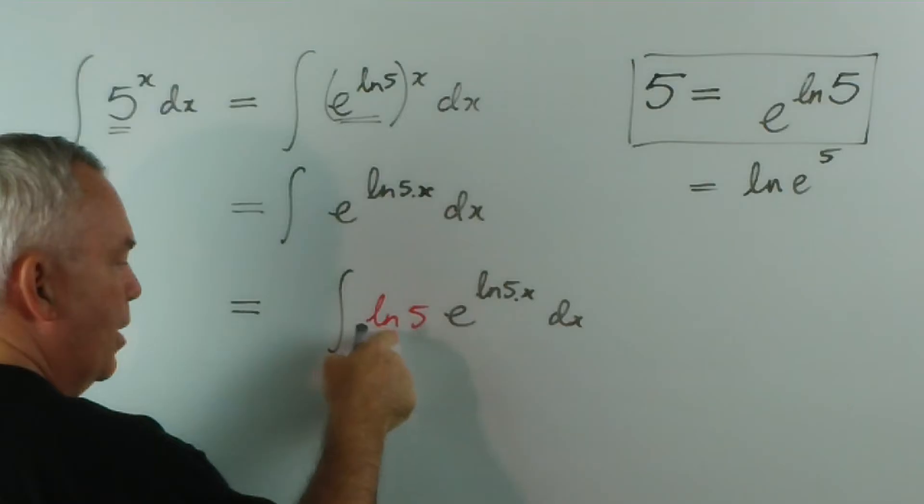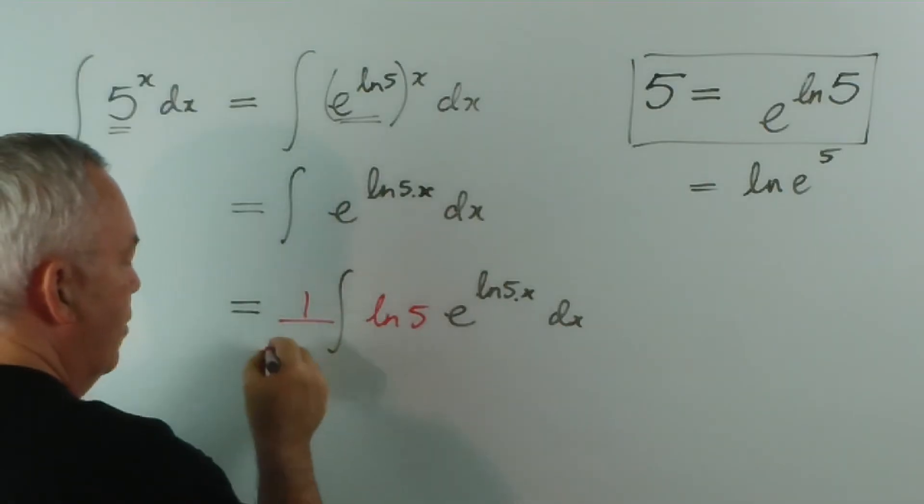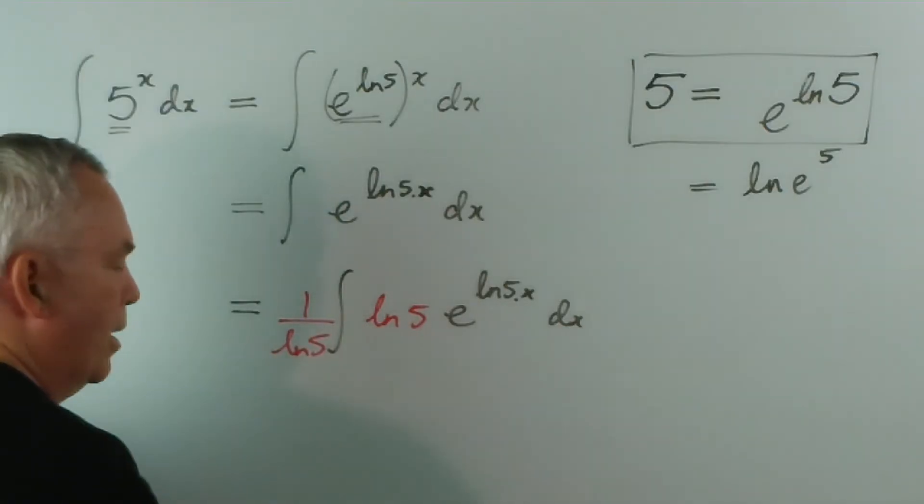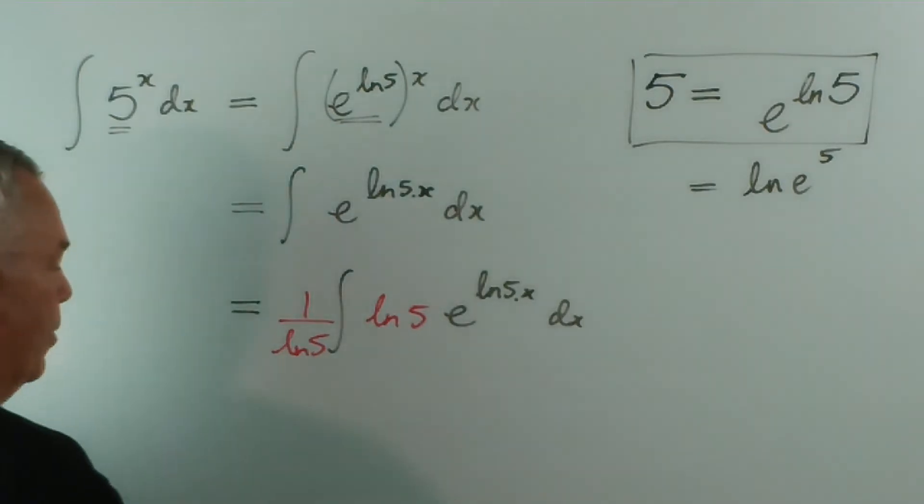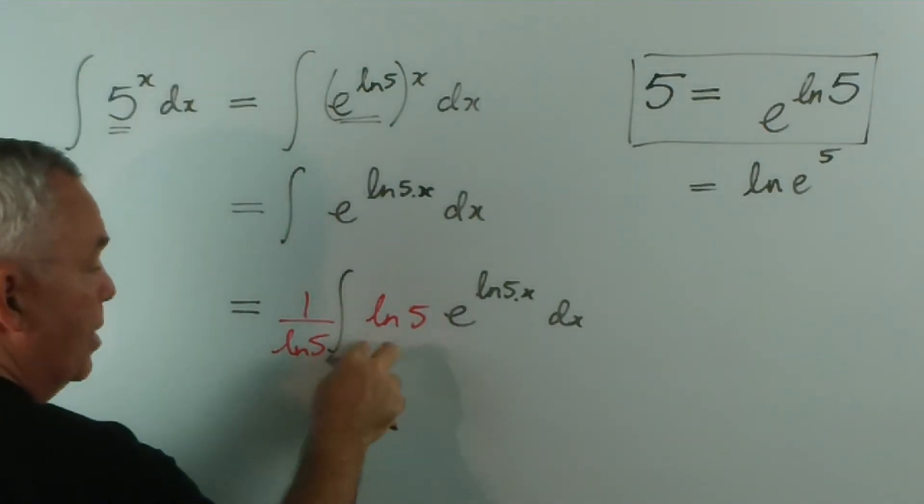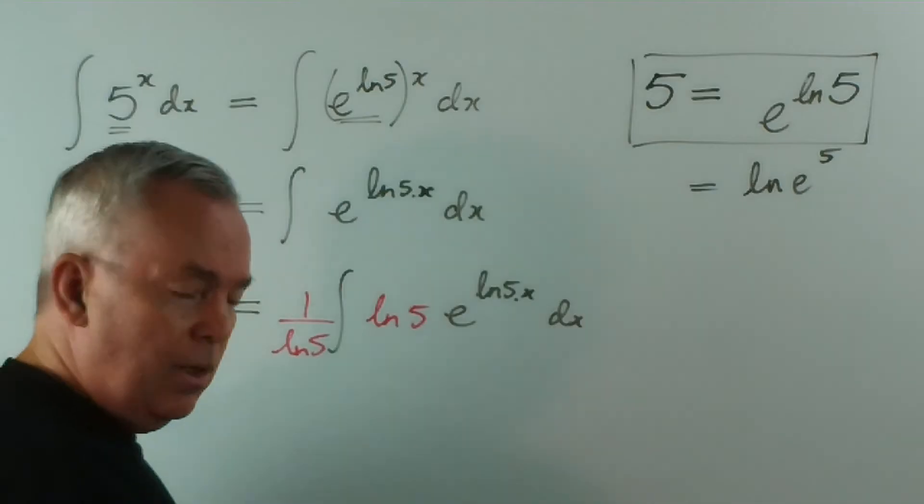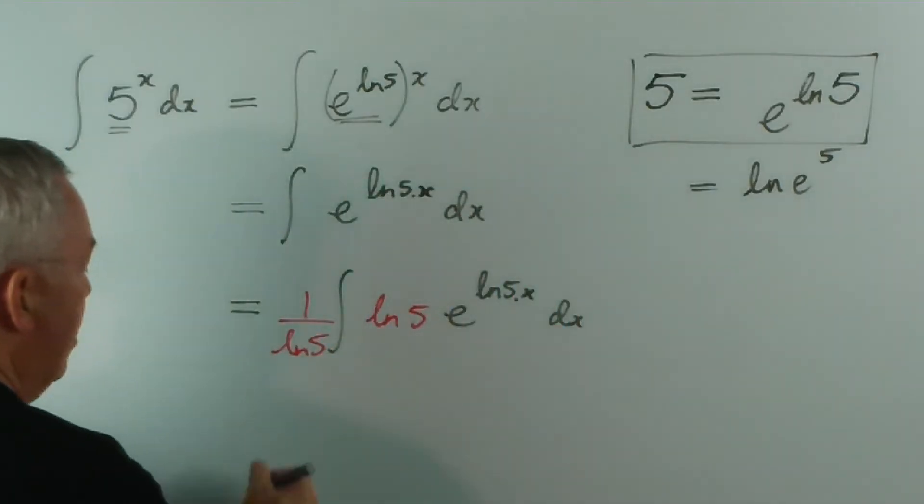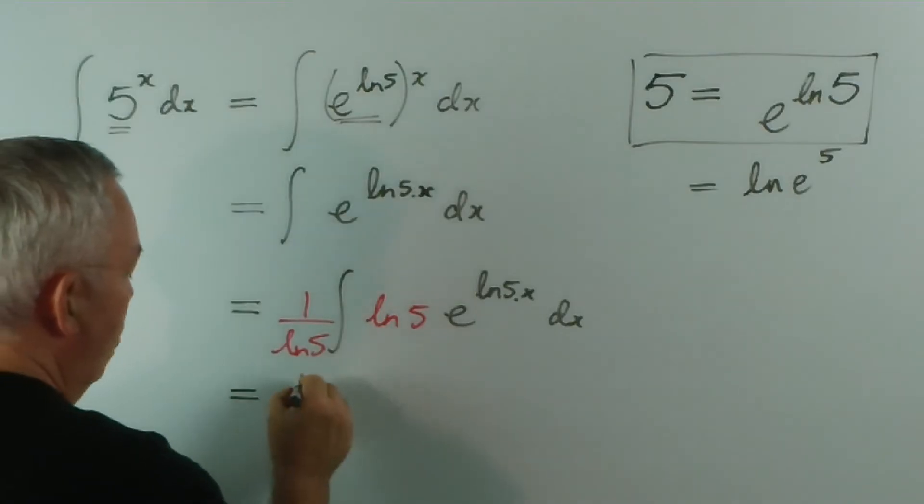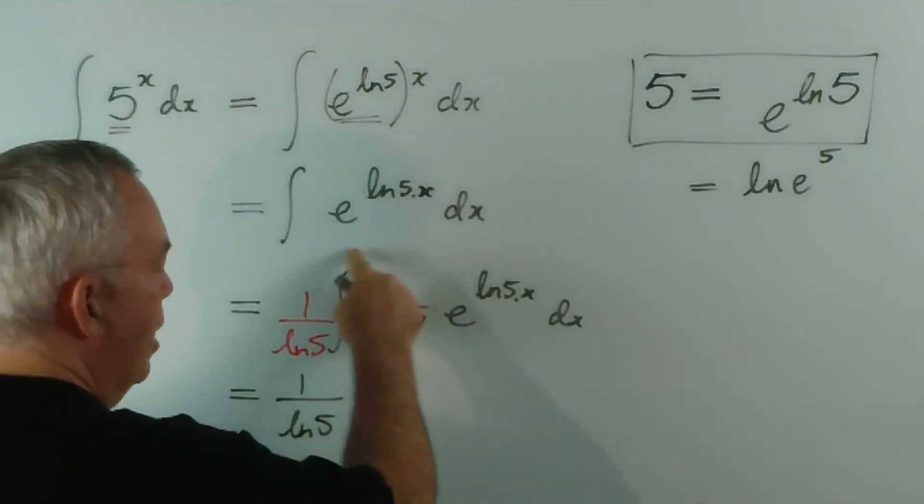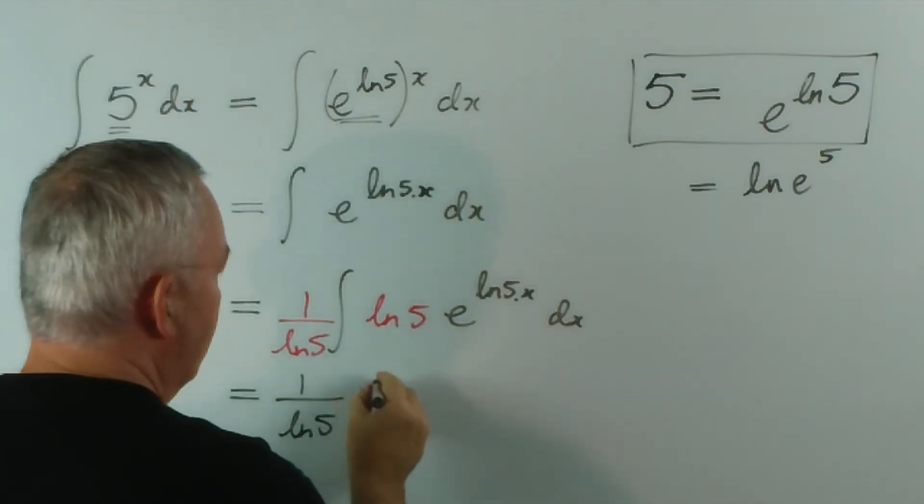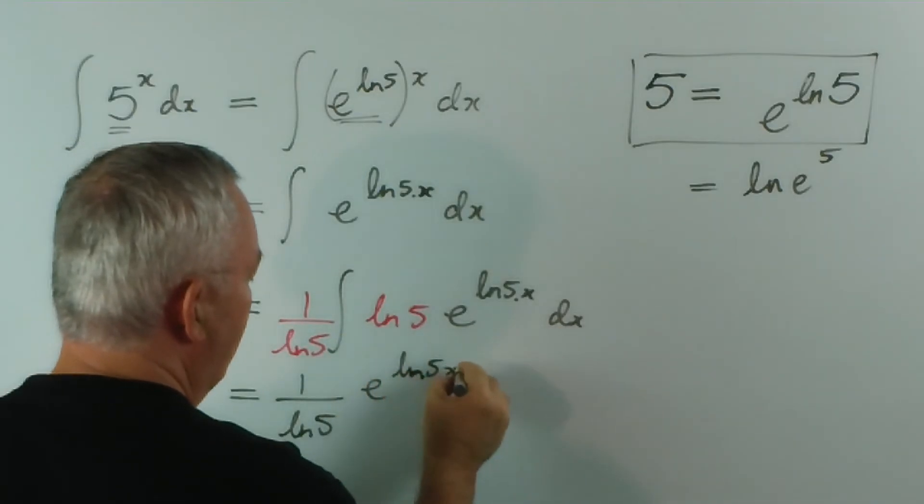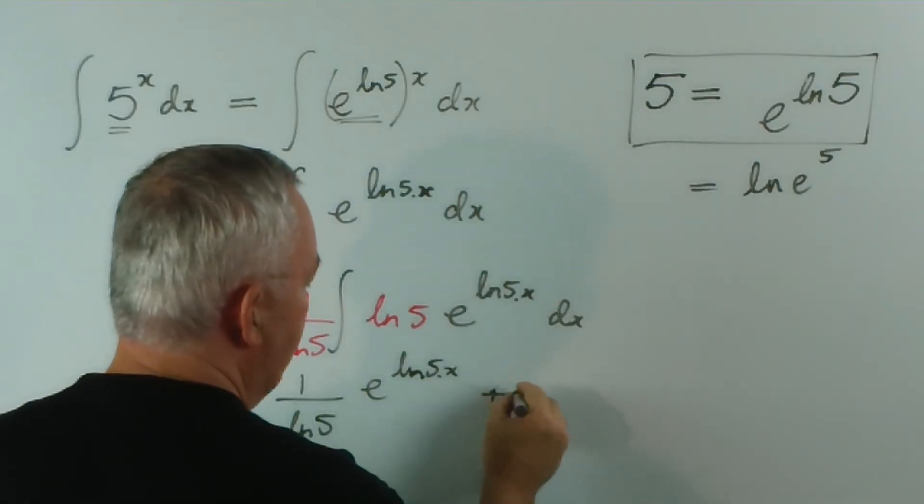And of course, to compensate for putting that number there, we divide by log 5 out the front, or multiply by 1 over log 5. Of course, that times that is 1. And again, multiplying by 1 makes no difference to the value of the integral. Therefore, we get 1 over log 5, and the integral of this is just that function, plus c.